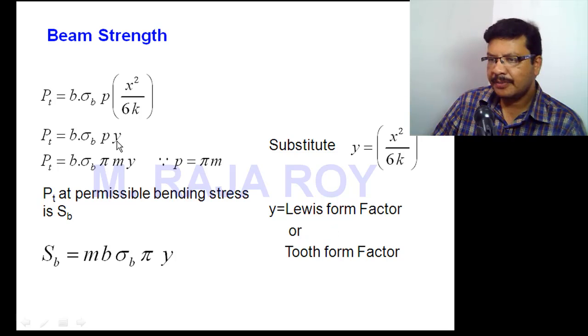After substituting that y value here, you will get Pt equal to b into sigma b into p into y. Now instead of p, I can substitute π into m because module is the main important parameter in terminology of gears. That's why circular pitch again I am replacing in terms of module. Then after substituting p value as πm, you will get finally Pt equal to b into sigma b into πmy.